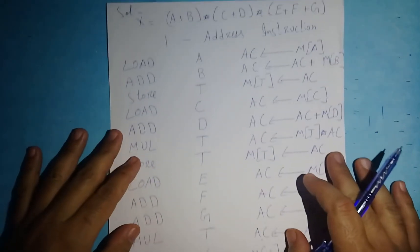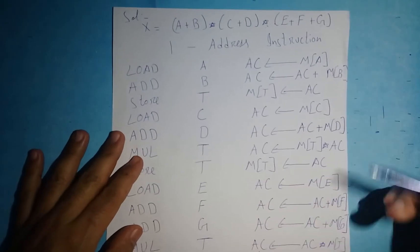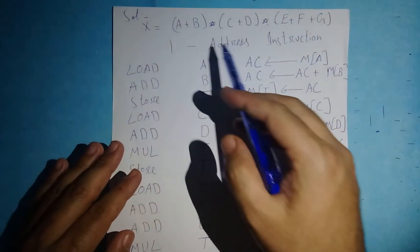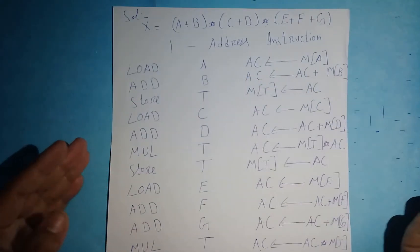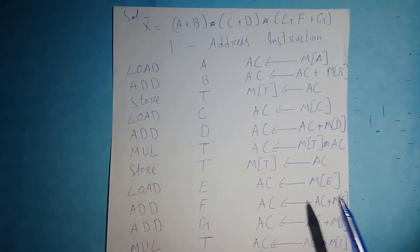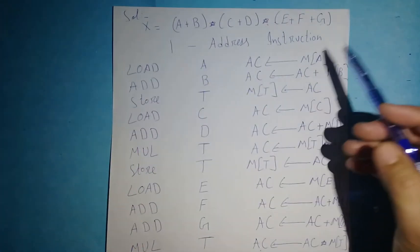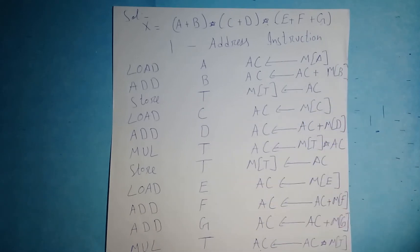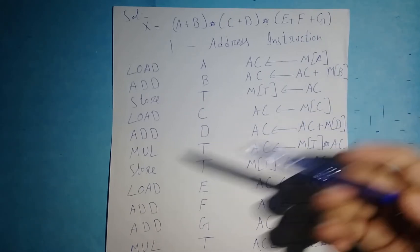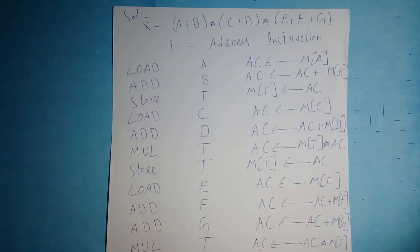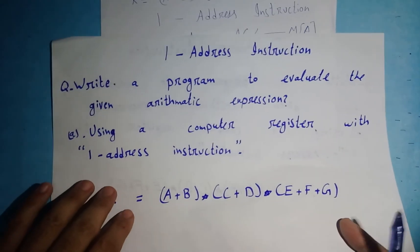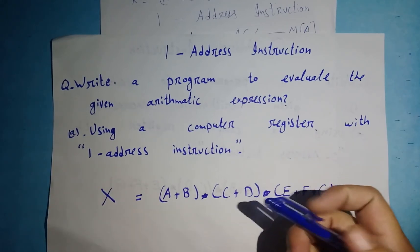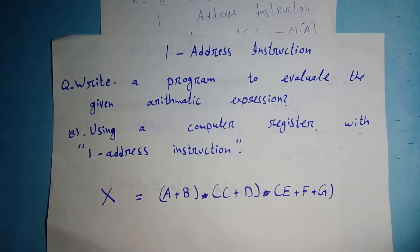The program has been completed. I evaluated the given expression and wrote a program using a computer register with one address instruction. I hope you understood how to write a program for evaluating any given arithmetic expression this way. If you have any questions, comment and I'll reply as soon as possible. Next time I'll come up with new topics — Allah hafiz and take care of yourself.